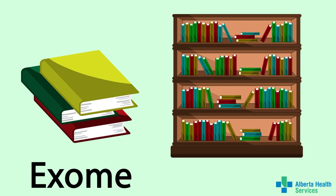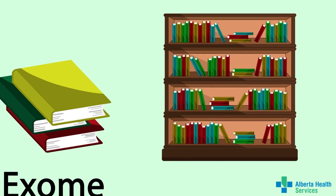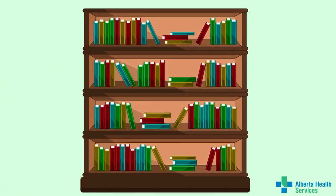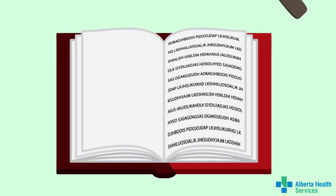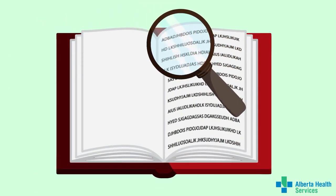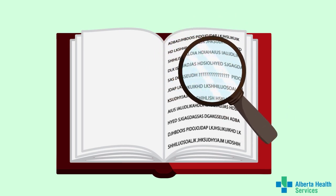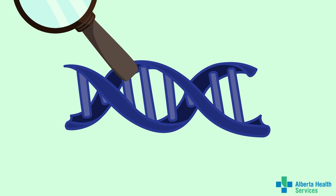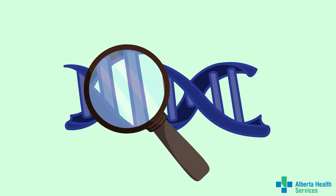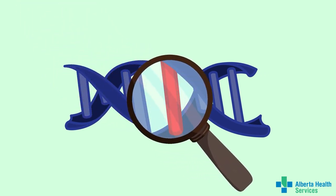We look at the exome because it contains genes that we know are important for health and development. With exome sequencing, we are reading through many genes, similar to reading through many books in a library. We read through each book to see if there are any misspelled, extra, or missing words that cause the book to not be understood. In the same way, we read through each gene to see if there are any differences that may disrupt the gene and cause health concerns.